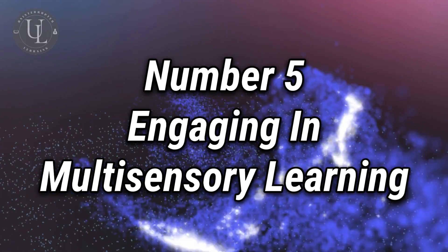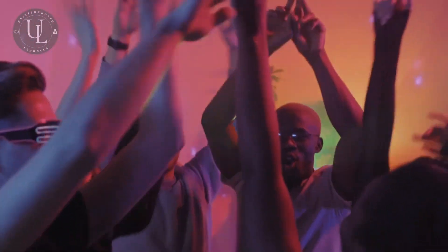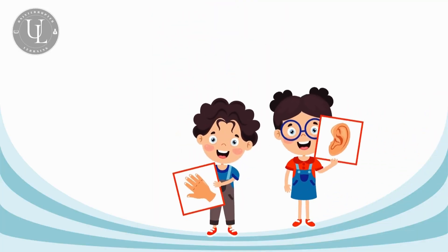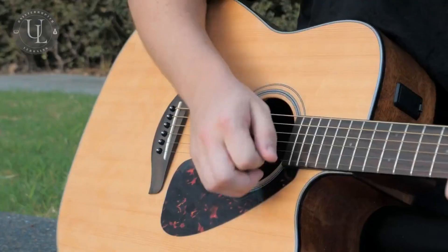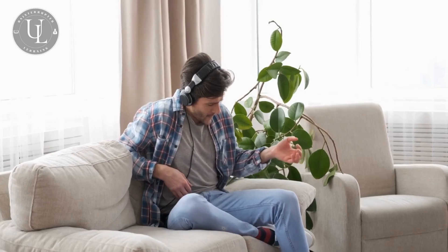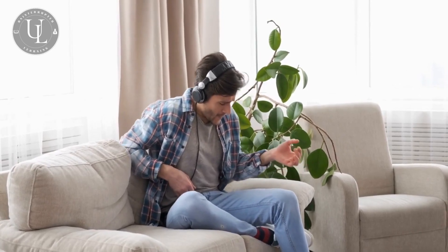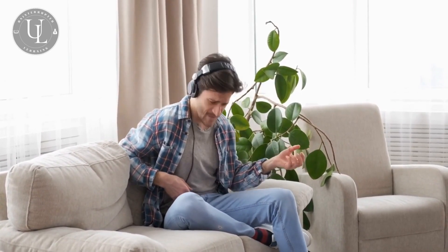Number five, engaging in multi-sensory learning. Multi-sensory learning is like throwing a wild, unforgettable party in your brain. It's all about incorporating multiple senses into your learning process, turning passive information consumption into an electrifying, immersive experience. Let's say you're trying to learn a new skill, like playing the guitar. Instead of just staring at sheet music and hoping for the best, multi-sensory learning encourages you to get your hands dirty. Well, not literally, unless you're playing air guitar.